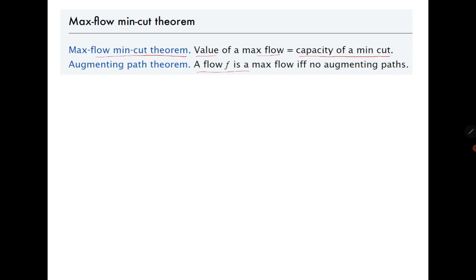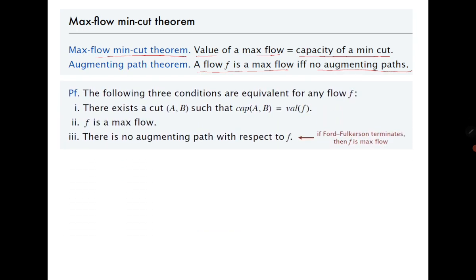There are two important results. One is that the value of a maximum flow equals the capacity of a minimum cut — this is the max-flow min-cut theorem. The next one is that a flow is maximum if and only if it has no augmenting path. To prove these two theorems it is sufficient to prove that the following statements are equivalent: there always exists a cut such that the value of the flow equals the capacity A-B, in which case f is a maximum flow and A-B is a minimum cut; and when f is maximum there is no augmenting path.